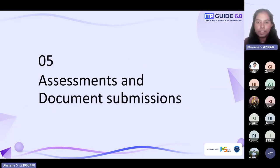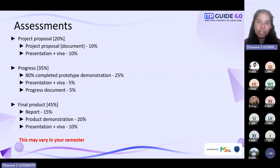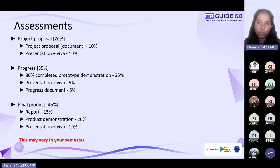Moving on to continuous assessments and document submissions — you have three assessments for the module. The first is the project proposal, where you present your proposal, have a Viva session, and then submit the project proposal document. The second is the progress assessment, by which time you should have completed at least 80% of your project. You will demonstrate that 80% completed project, have a Viva session, and submit the progress document. In the final assessment, you demonstrate the entire project, have a Viva session, and submit the final report. The final assessment carries 45% weightage, so be focused and prepared. Note that this may change in your semester.